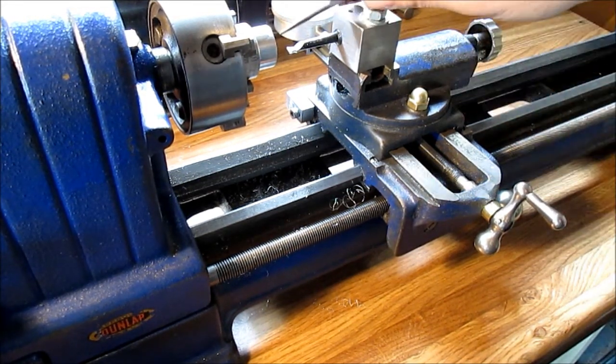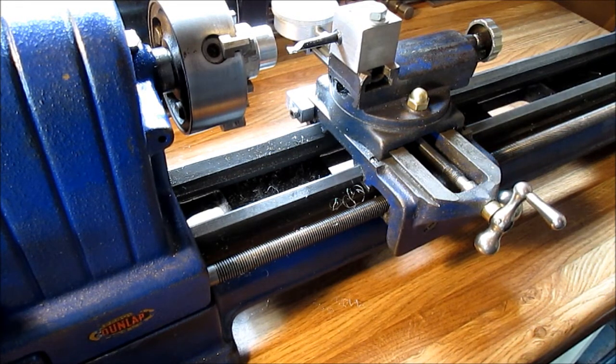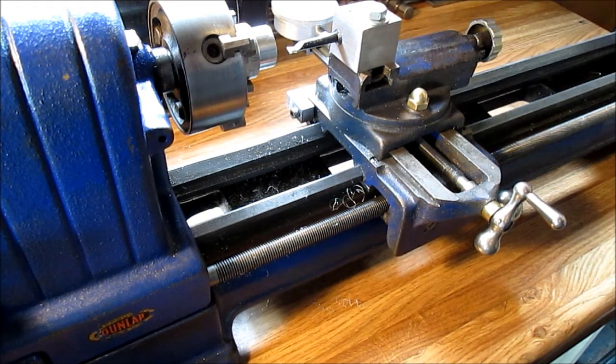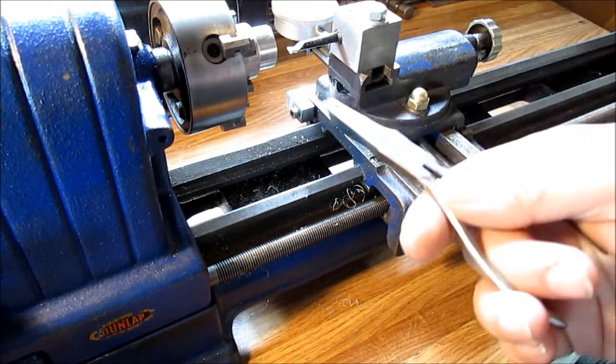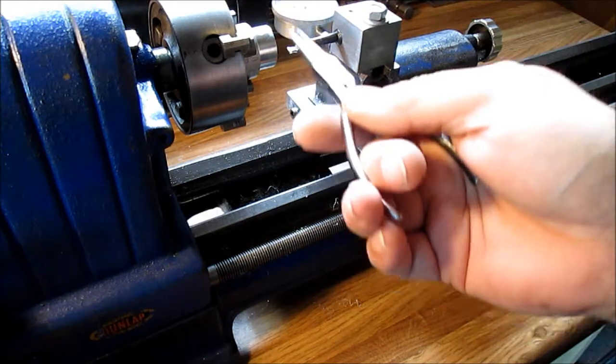But we had this set up so we're practicing doing a little boring with the meter back there, which is backwards. When you come out, the needle is going to go down. We're figuring that out, but it seems to be working good. We're still practicing here just on a piece of aluminum.